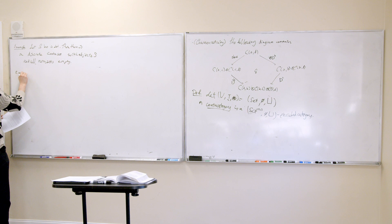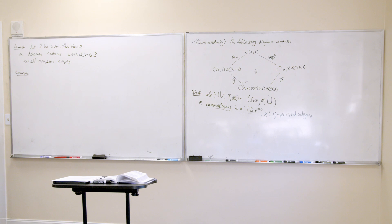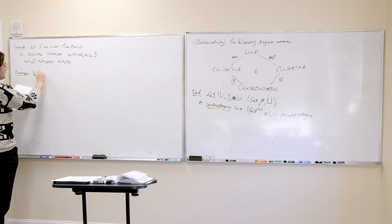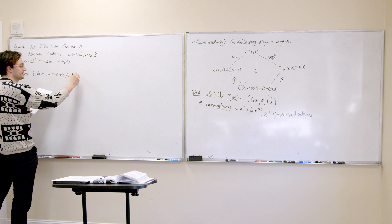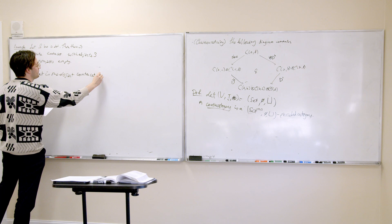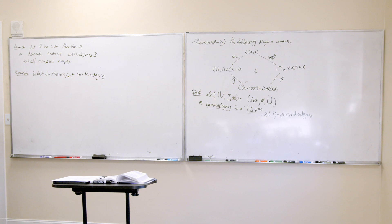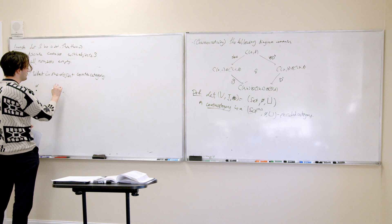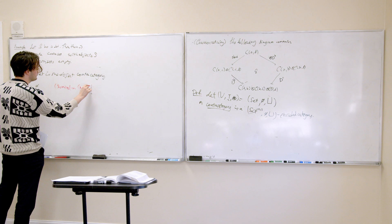Let S be a set, then there is a discrete contra category with objects S, and all non-sets empty. In regular category theory, we know that there's a game we can play where you look at categories under constraints. An example would be a one-object category is a monoid. Who wants to guess what a contra monoid is? The non-set is empty. There's a unique one, and it turns out to be the terminal contra category.